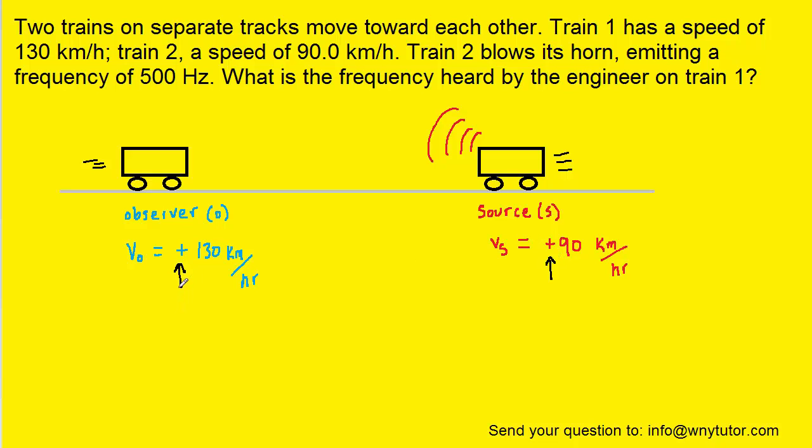The reason that the observer's speed is positive is because it is approaching the source of the sound. Similarly, the reason that the source speed is positive is because it too is approaching the observer. So in short, whenever an object is approaching the other object, you assign a positive sign to its speed.